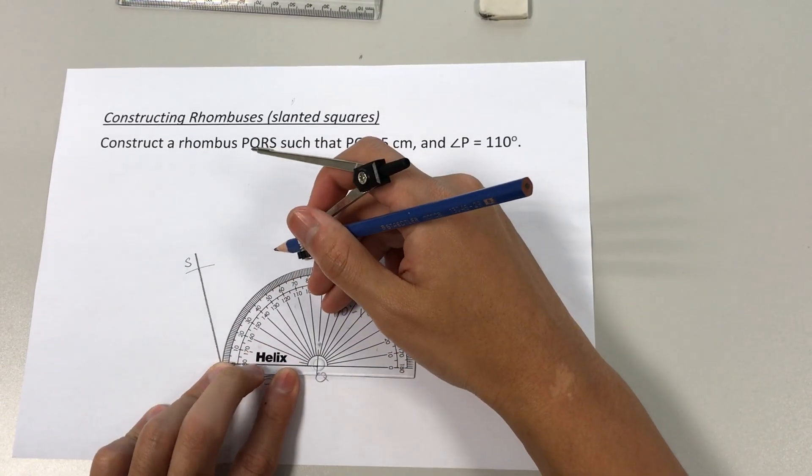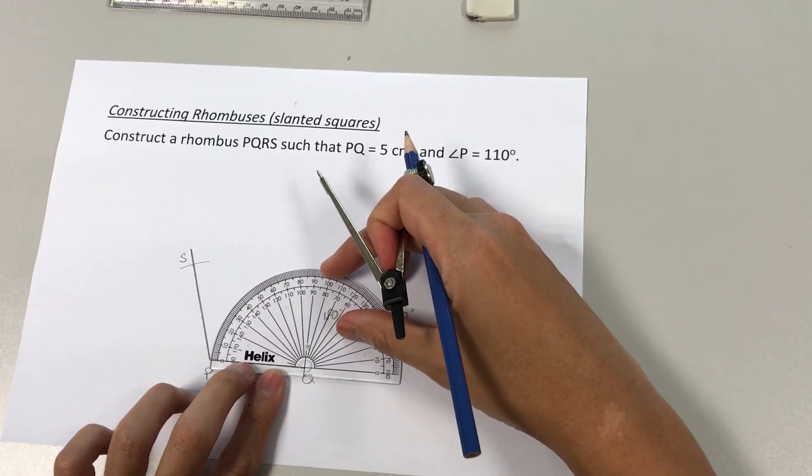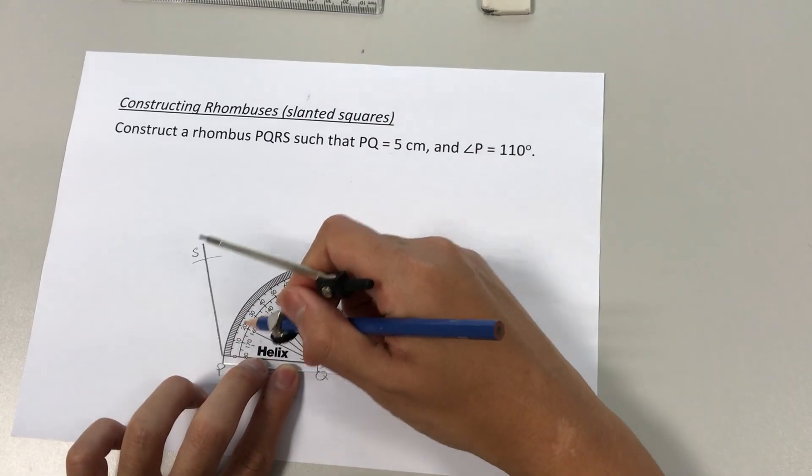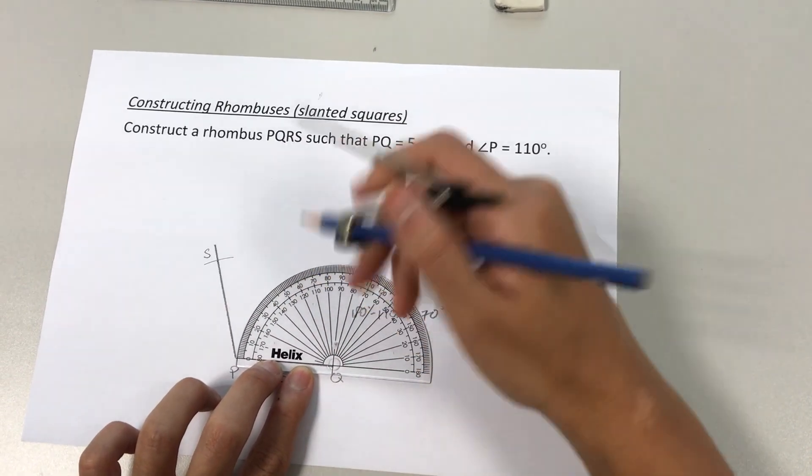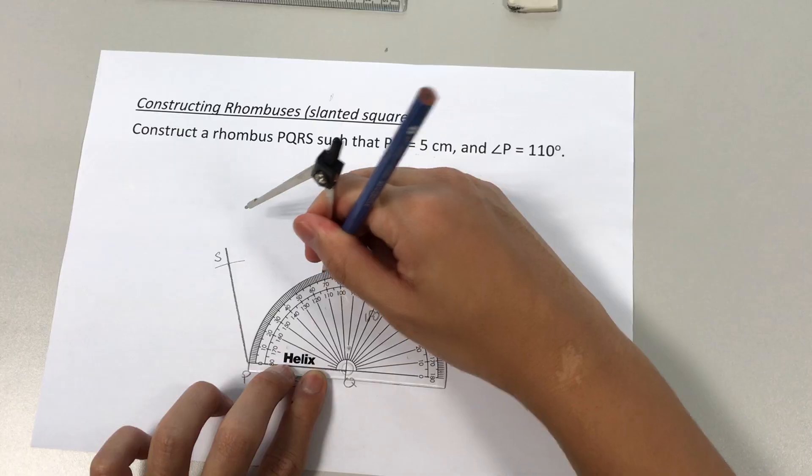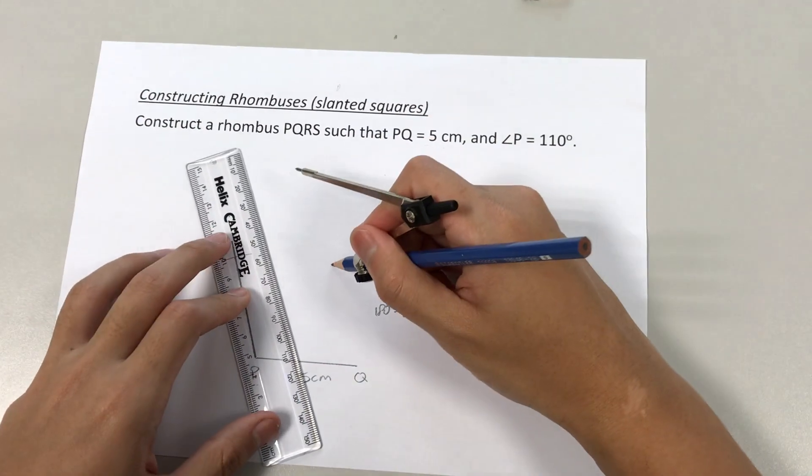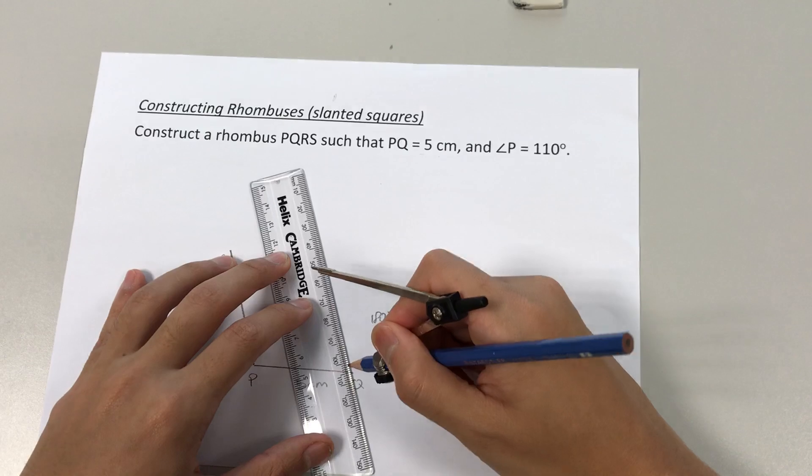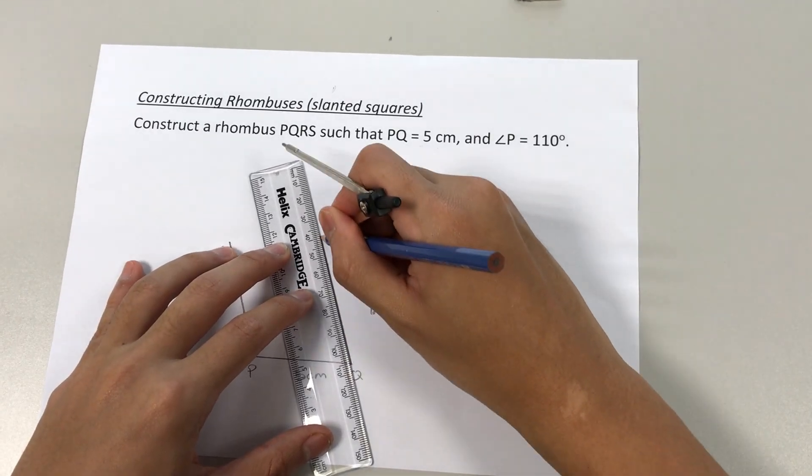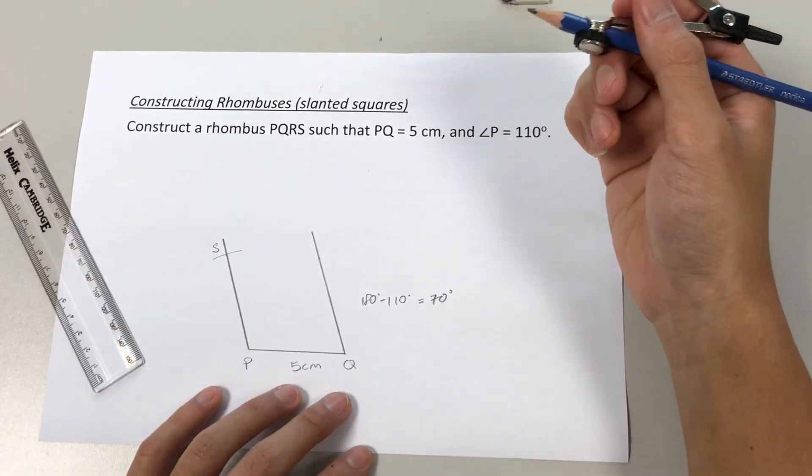Mark out a 70 degree angle. 10, 20, 30, 40, 50, 60, 70. Mark it out. Take our ruler. Draw a line.